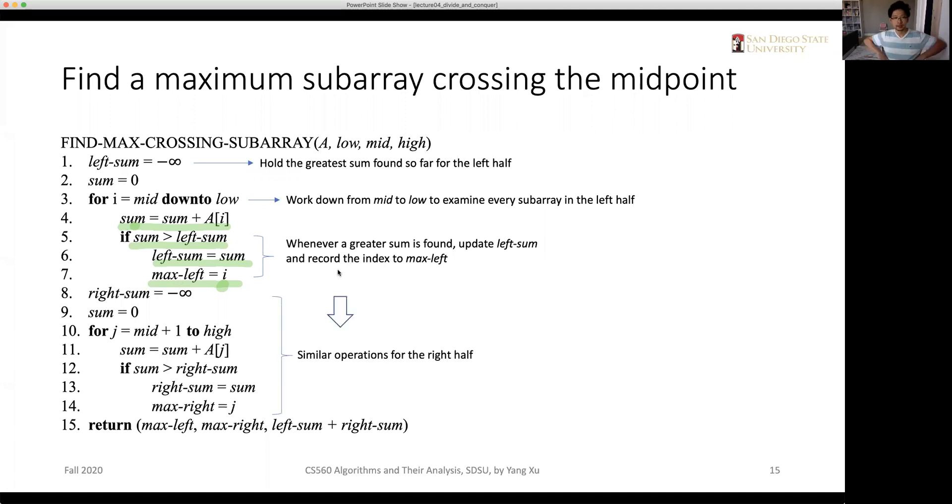And a similar function, similar goal is achieved by the second for loop, which applies to the right half. And the for loop iterates from mid plus one to high. And the return code will return the indices max left and the max right that indicates the maximum sub area and its summation, the sum of the values.